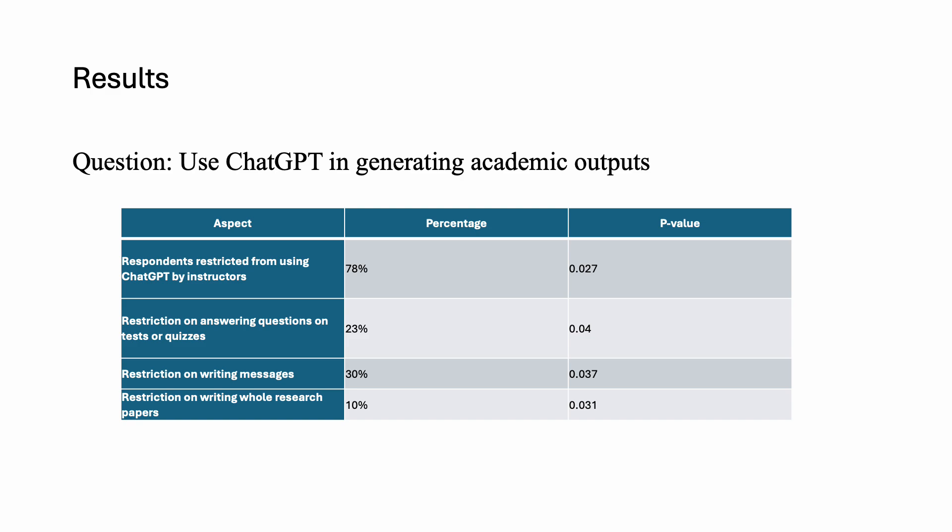In regards to using ChatGPT in generating academic output, more than 78% of the respondents reported being restricted from using ChatGPT by their instructors. This limitation was observed across various assessment items, including answering questions on tests or quizzes, as well as writing messages and writing whole research papers.